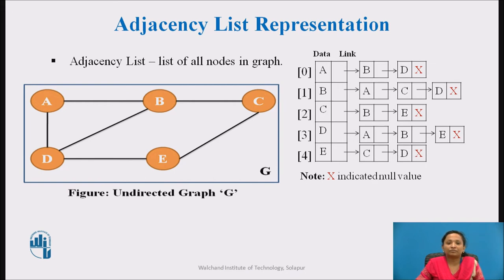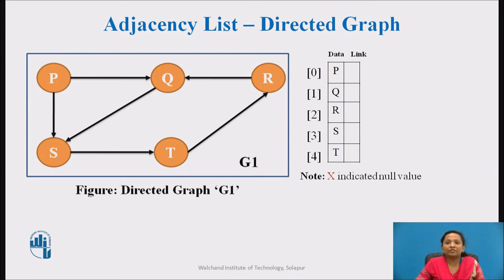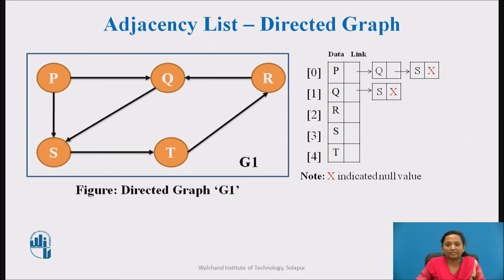Here directed graph G1 is represented using an adjacency list. First, an array of all five nodes p, q, r, s, and t is created along with links. Node p has outgoing edges, so node p is linked to nodes q and s. An outgoing edge is present from node q to node s, therefore node q is linked to node s, with the last link field holding null. An outgoing edge is present from node r to node q, therefore r is linked to node q. An outgoing edge is present from node s to node t, therefore s is linked to node t. An outgoing edge is present from node t to node r, therefore node t is linked to node r.